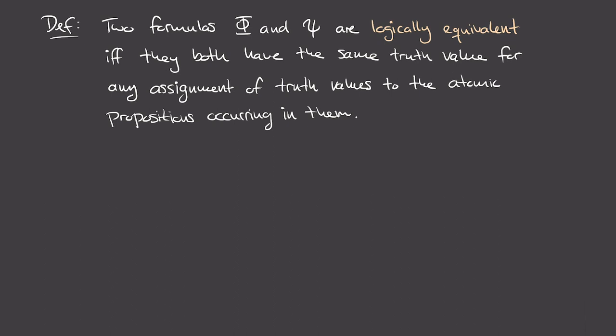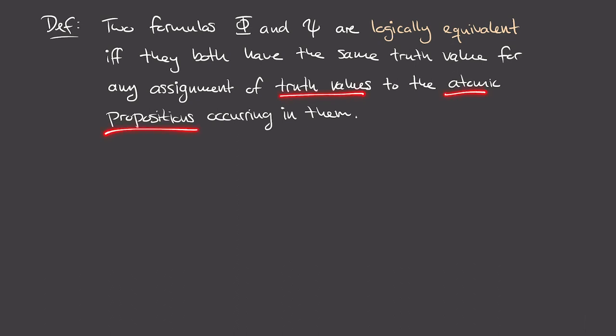That brings us to the final definition for this video, which is that of logical equivalence between formulas. We now have two formulas phi and psi — we're assuming they're well-formed — and we say that they are logically equivalent if both of these formulas have exactly the same truth value regardless of which truth values we assign to the atomic propositions that occur in them. The reason we're calling this logically equivalent is because we can't distinguish between phi and psi using just truth values.